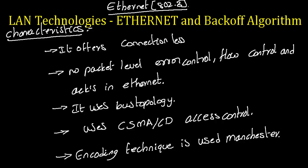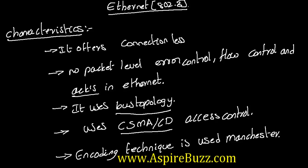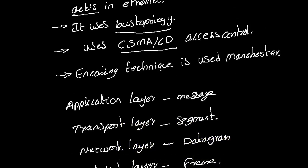The LAN technologies include Ethernet, IEEE 802.3. The characteristics of Ethernet are: it offers connectionless services with no packet level error control and flow control, and access is in the Ethernet. It uses bus topology and uses CSMA/CD for access control, and the encoding technique is Manchester encoding.